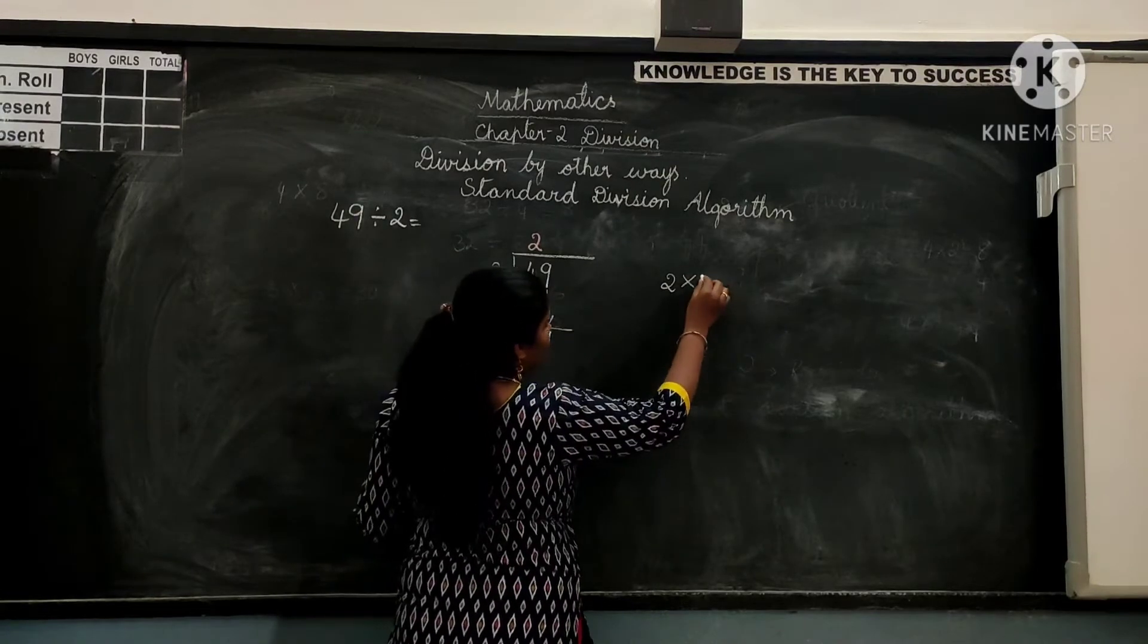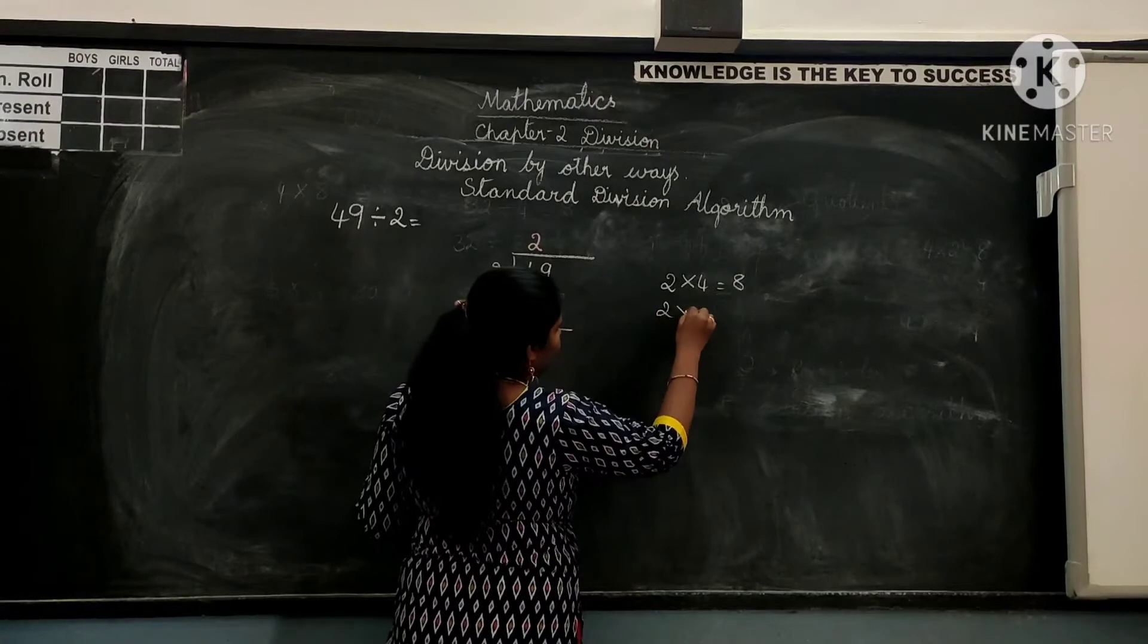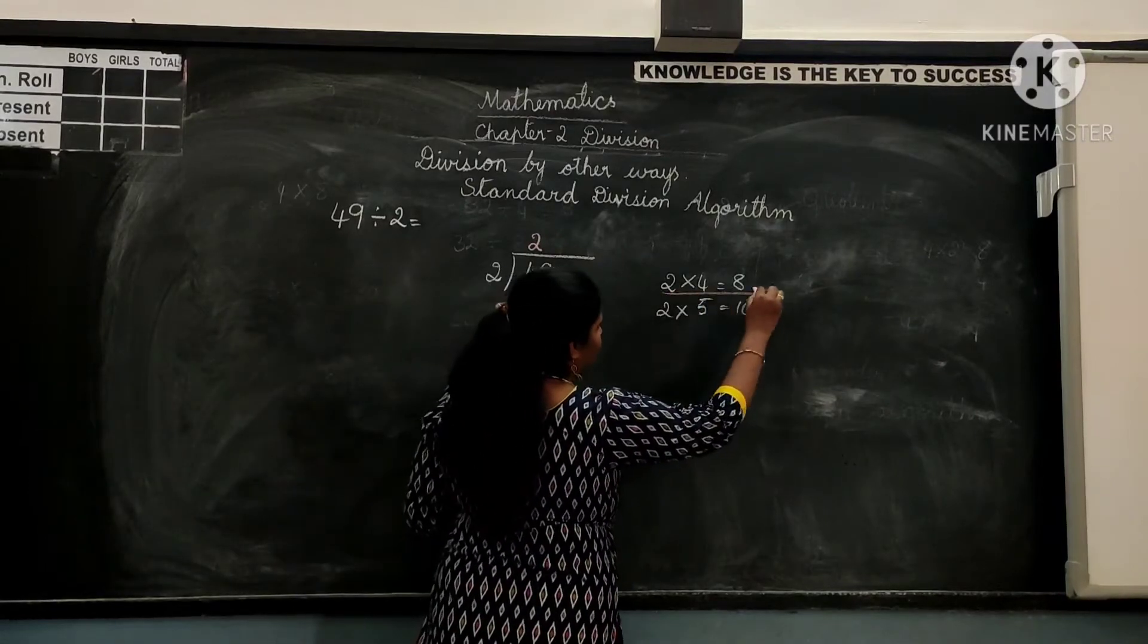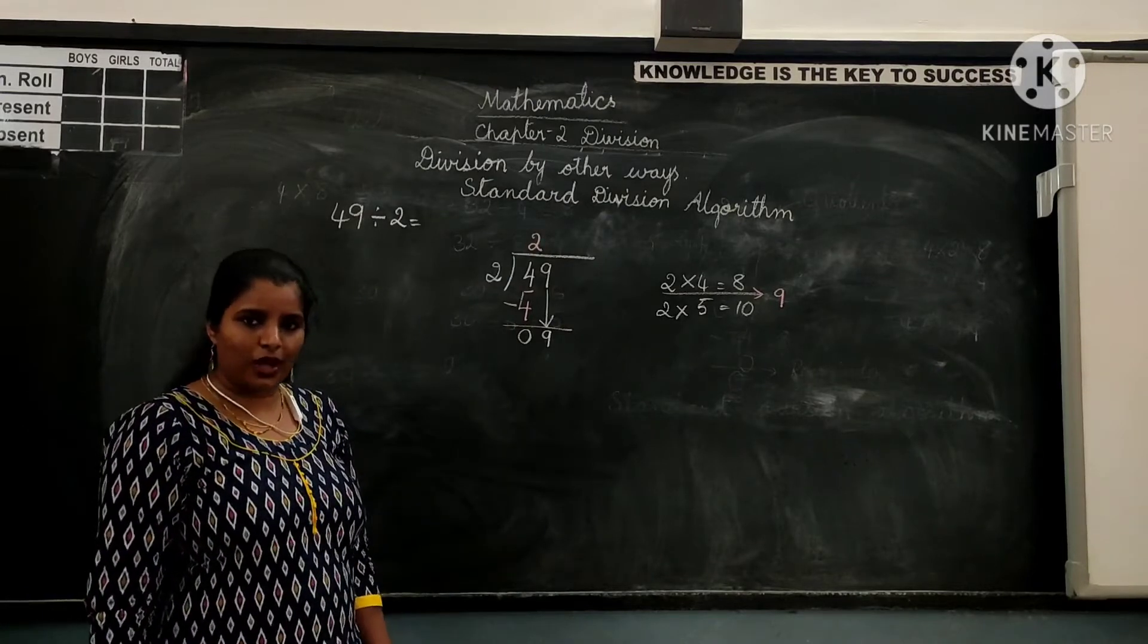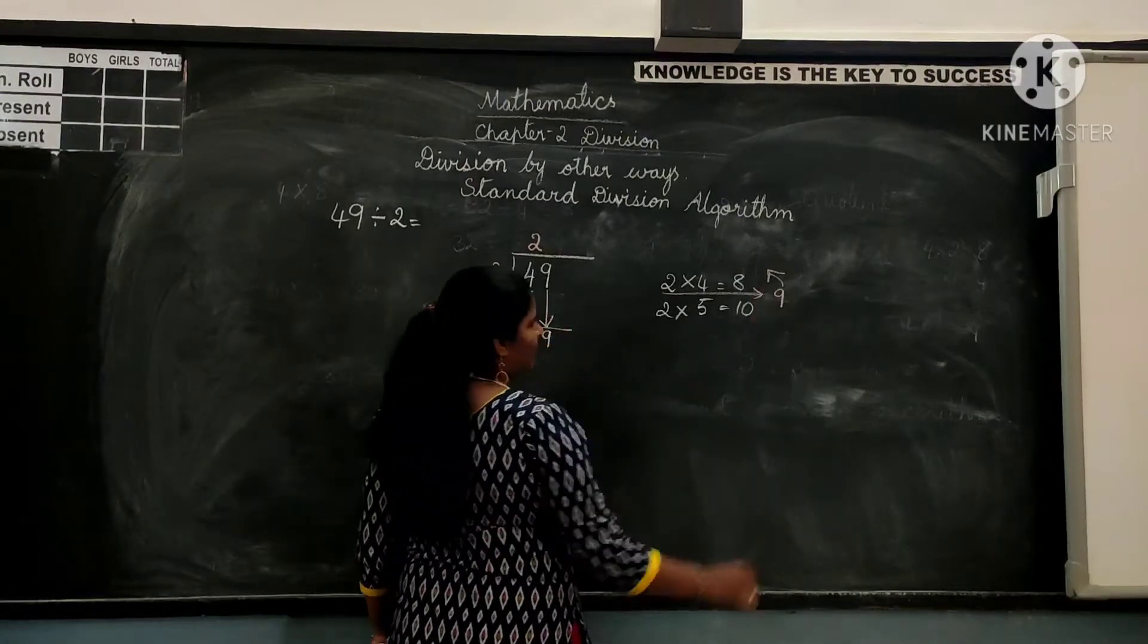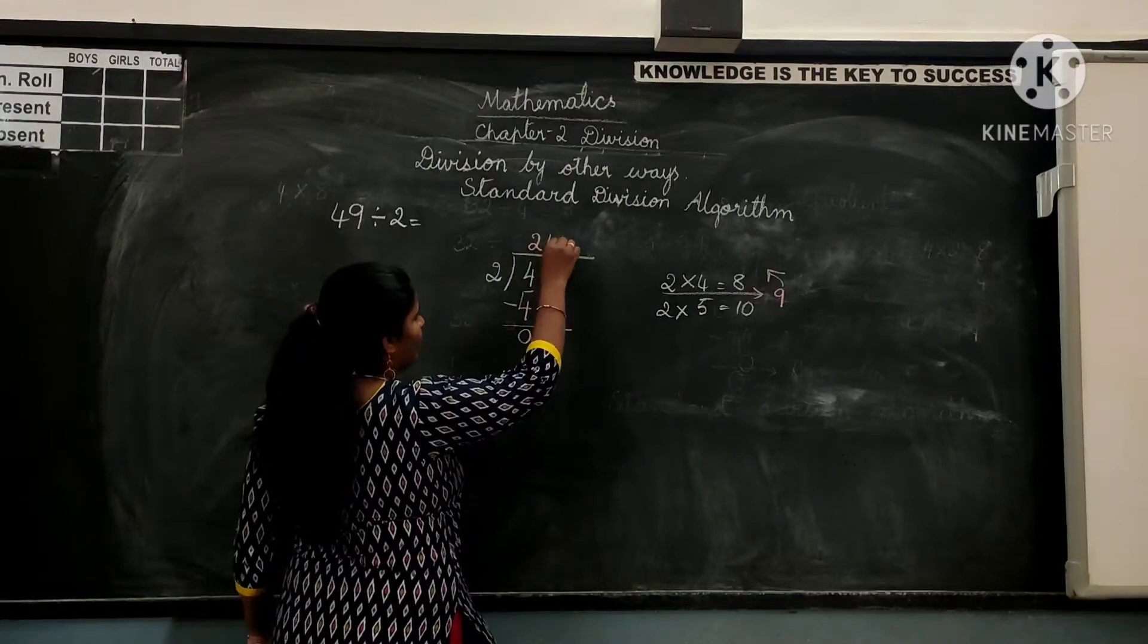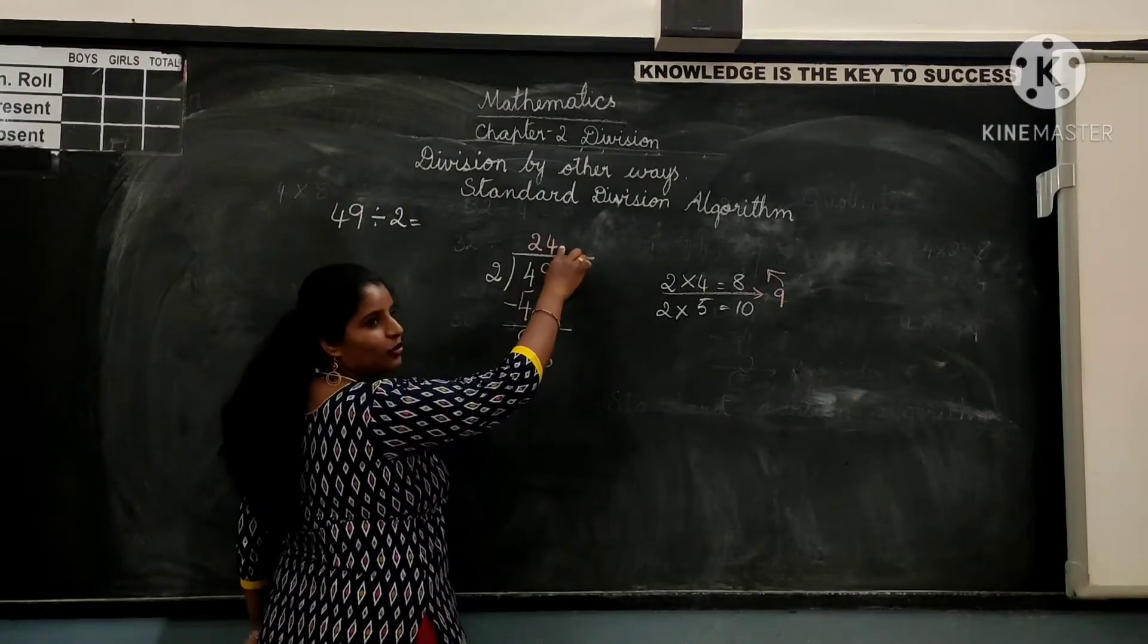2 fours are 8, 2 fives are 10. We won't get 9 anywhere. 9 lies in between here. So now what we will do. We have to always choose the lesser number. We have to always choose the smaller number.